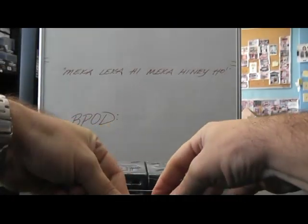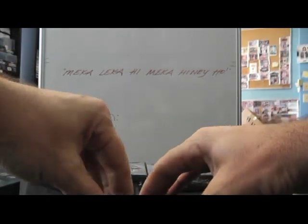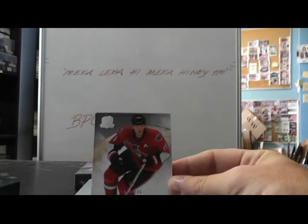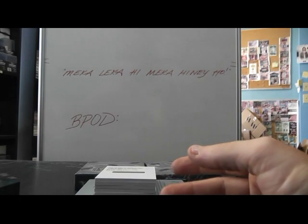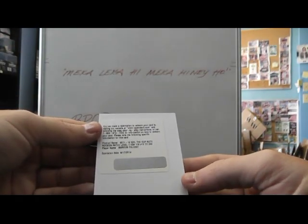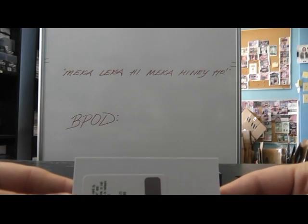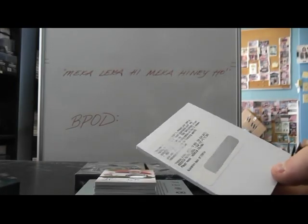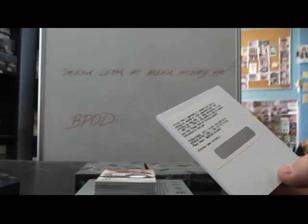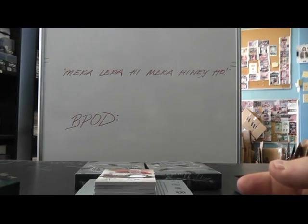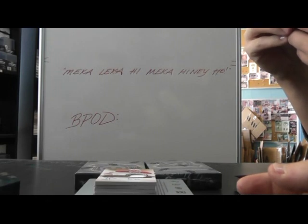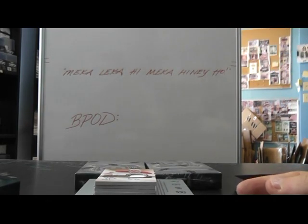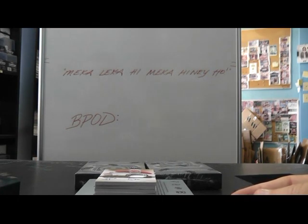Then we have Jason Spezza, 249, base card — that one's for the Senators. Then we have a cup auto rookie patch level one, 249 — Marcus Felino. Hang on one second, just verifying on YouTube here. So the Felino is Buffalo — Sabres, gotcha. I'm talking about the Marcus card — Buffalo, there we go.